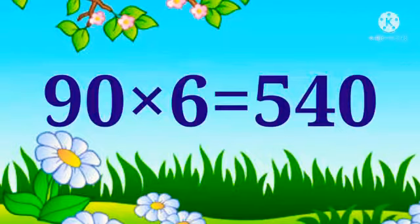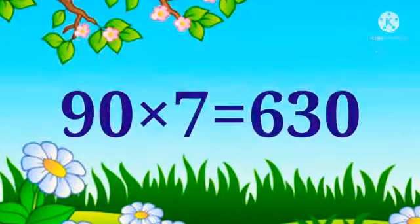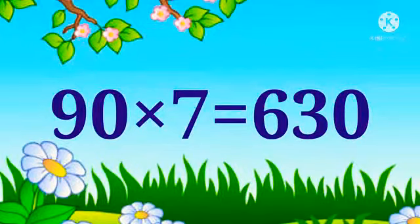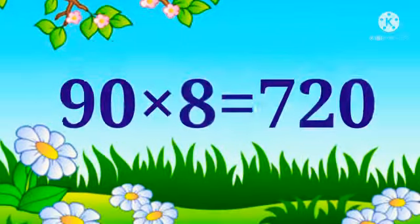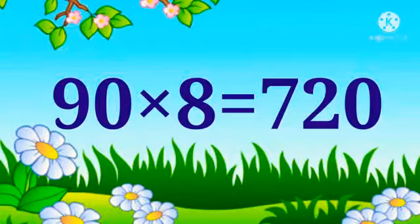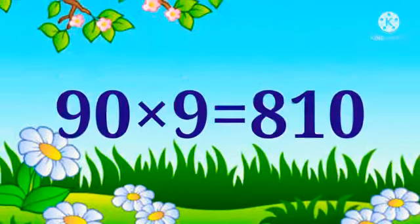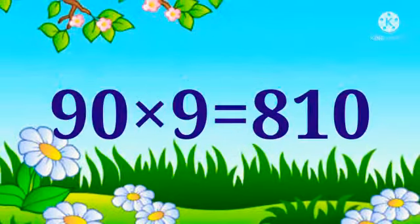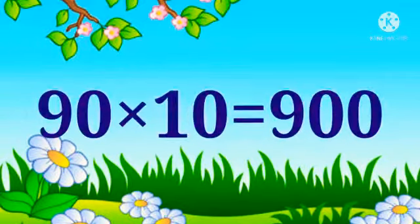90 times 6 is 540. 90 times 7 is 630. 90 times 8 is 720. 90 times 9 is 810. 90 times 10 is 900.